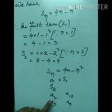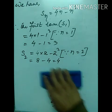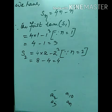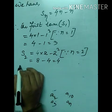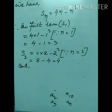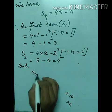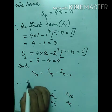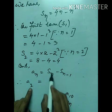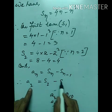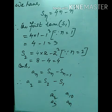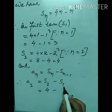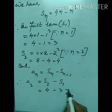Now to find the second term a₂, we use the formula aₙ = Sₙ − Sₙ₋₁. Therefore a₂ = S₂ − S₁ = 4 − 3 = 1.